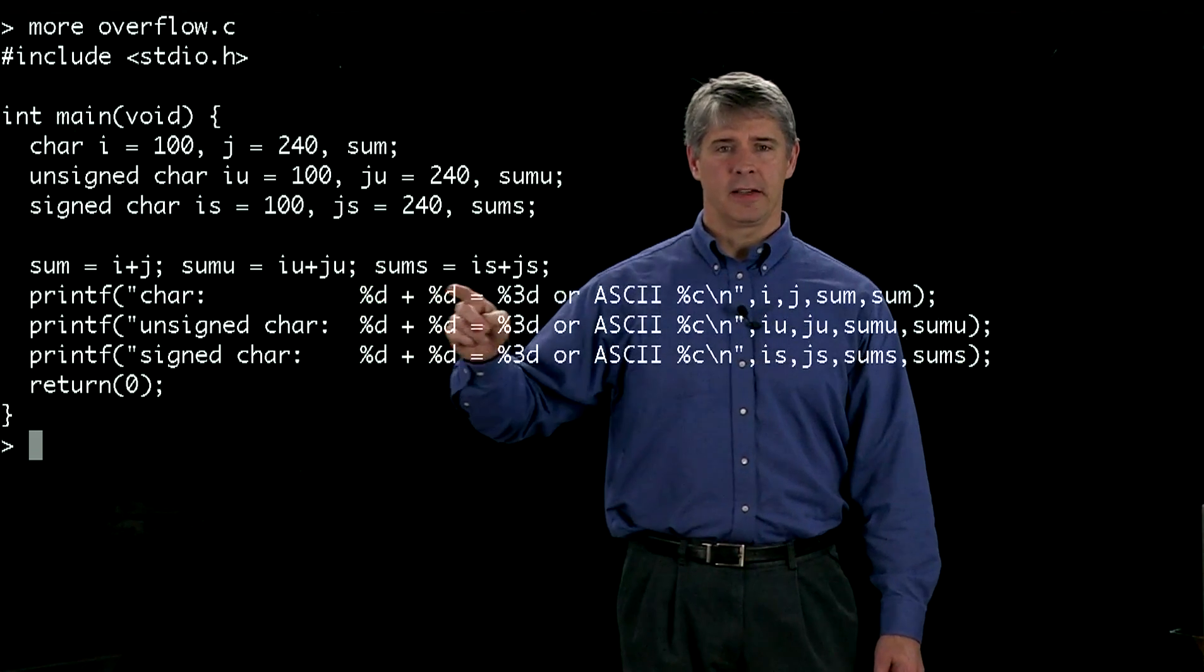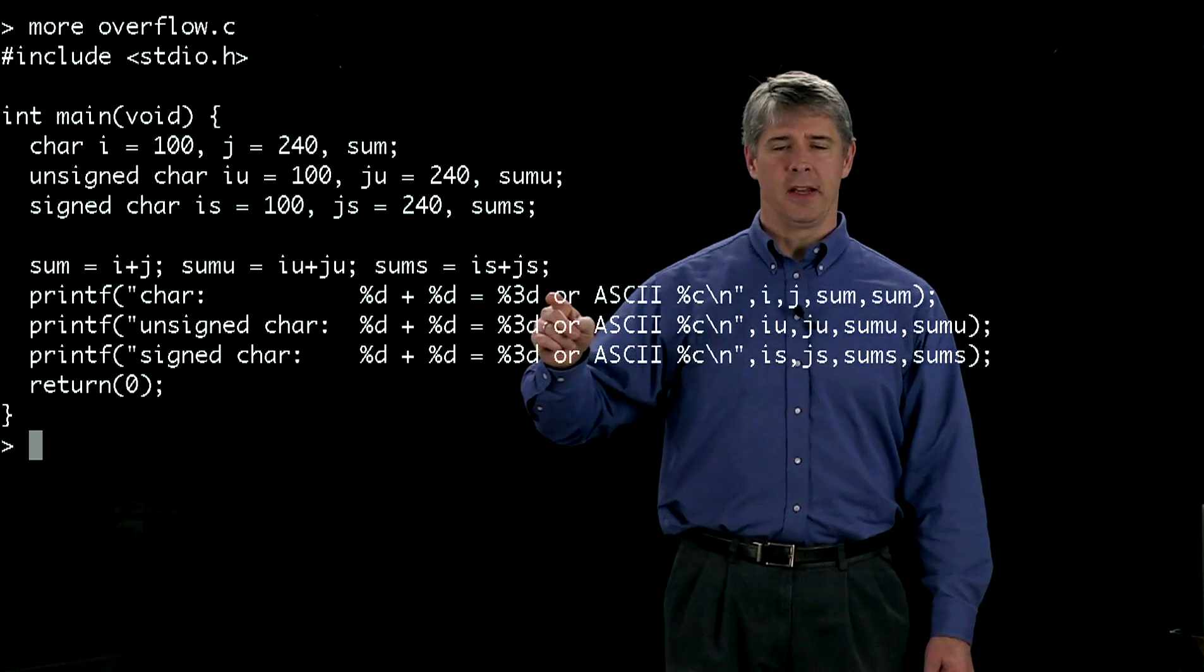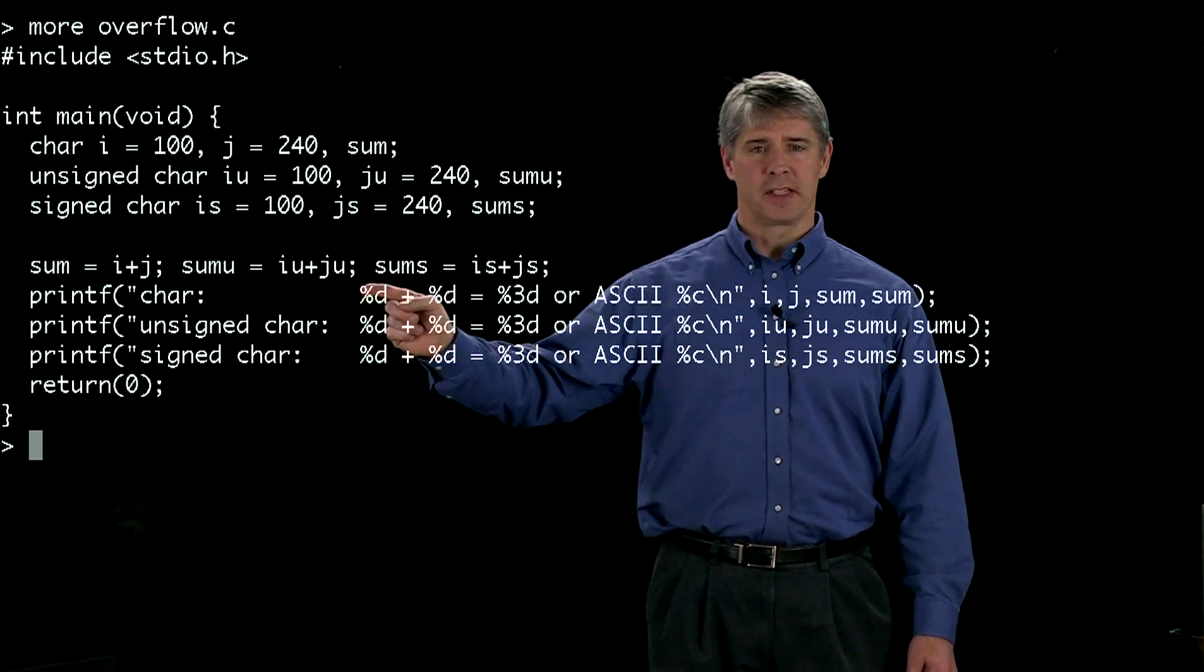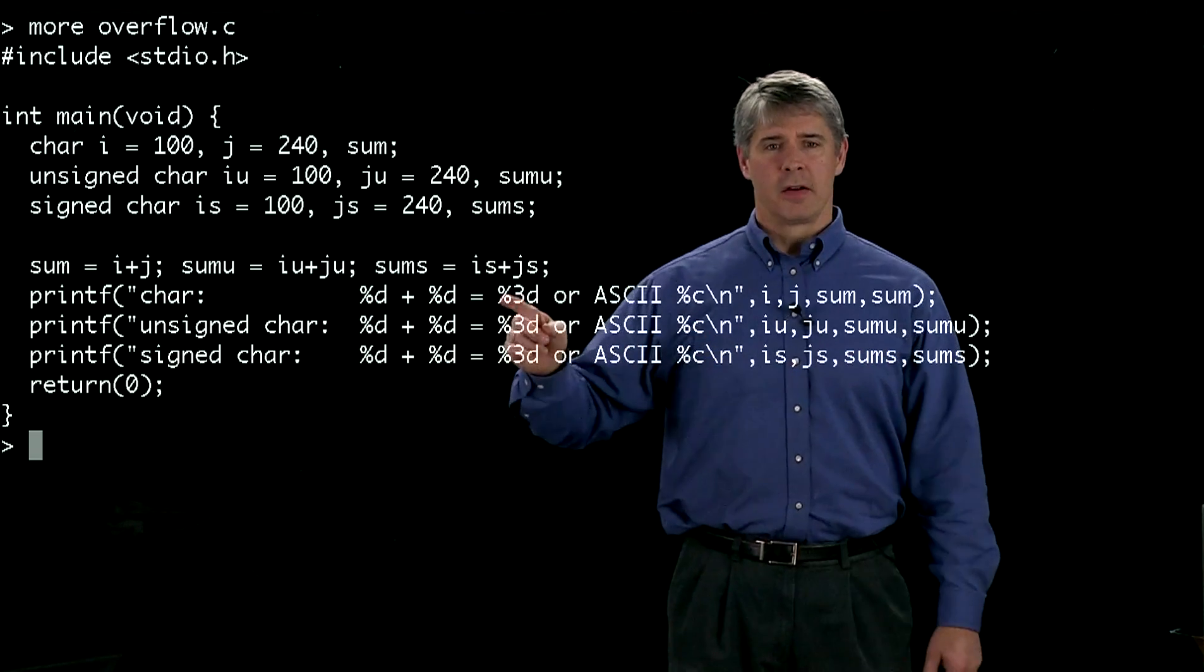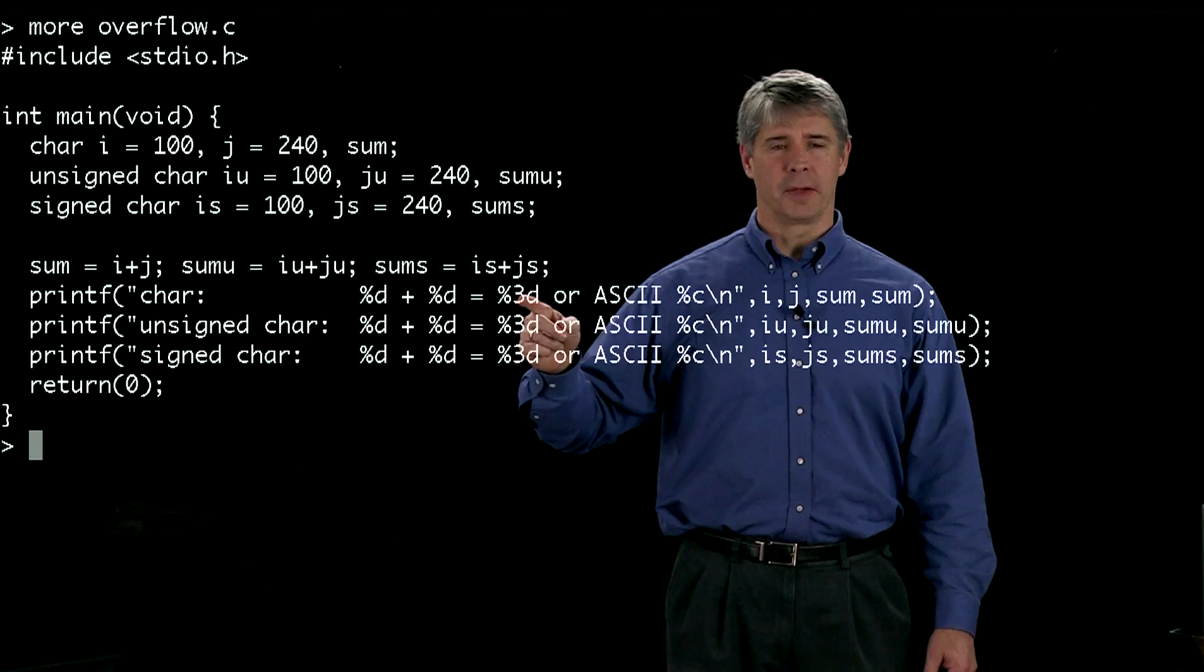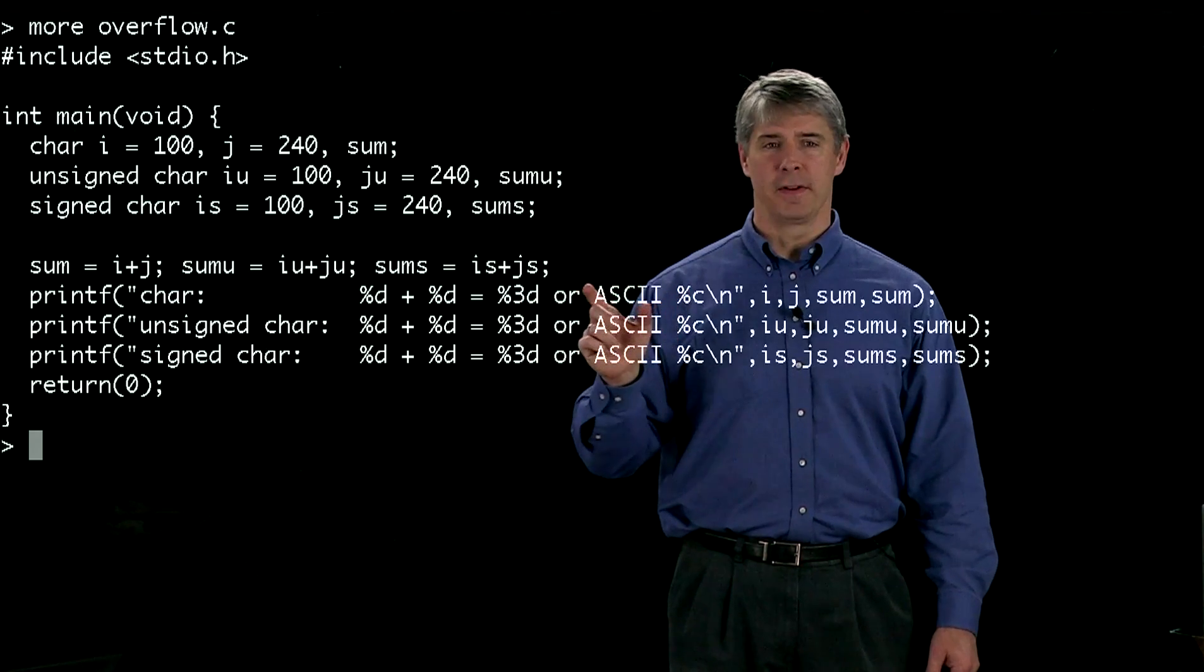So we've got %d here, %d, %3d. That means we're going to print these first two integers with as many spaces as is needed to print them, whereas this third integer we're going to print out with three spaces even if it's shorter.